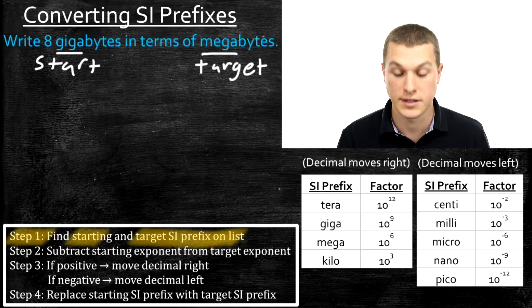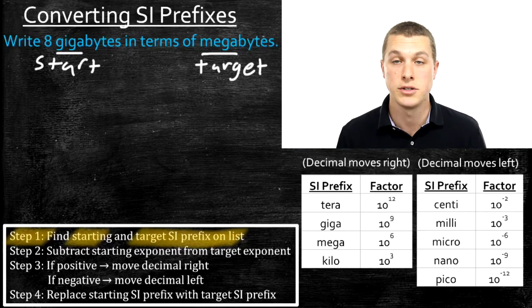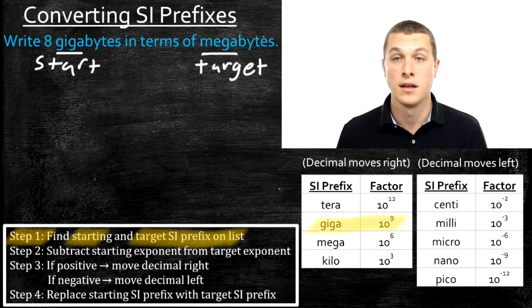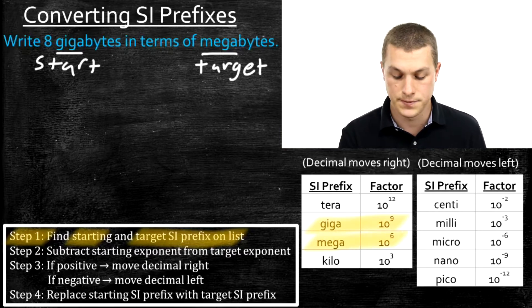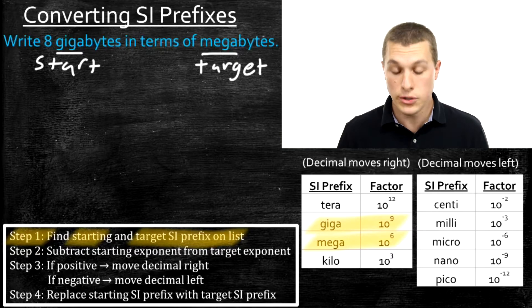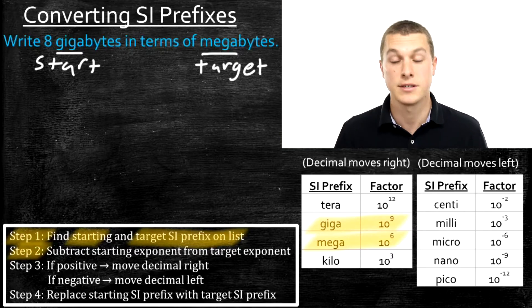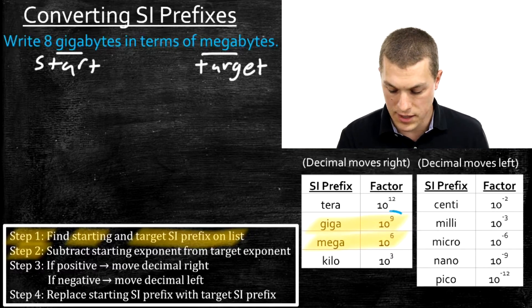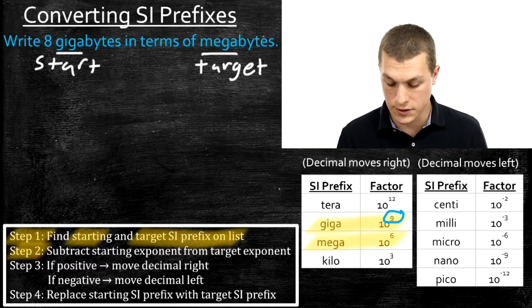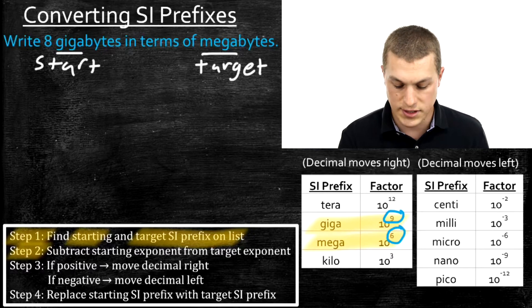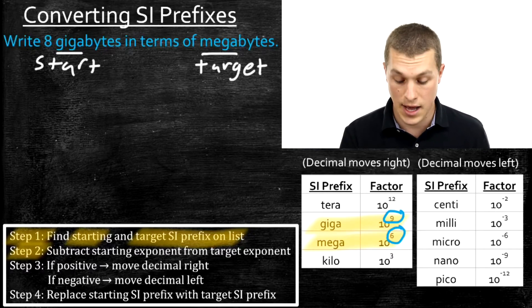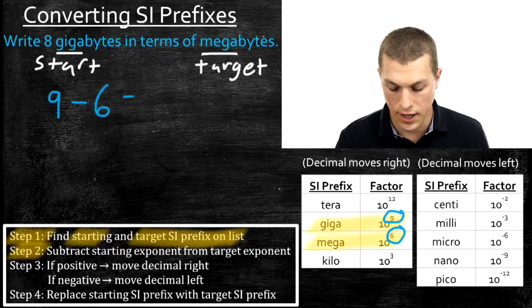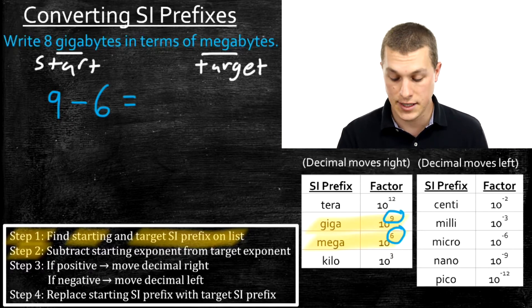We go down to our SI prefix list and identify our starting and target SI prefixes — starting being giga at 10 to the 9th, and our target being mega at 10 to the 6th. Step two is to subtract the starting exponent from the target exponent. So we subtract 9 from 6: 9 minus 6 gives us 3.